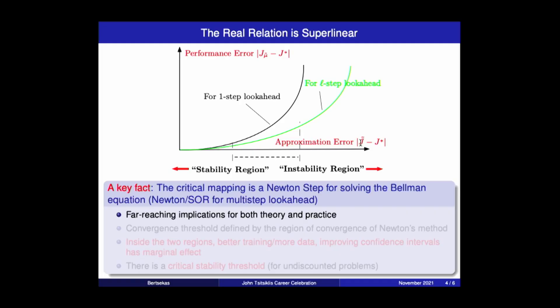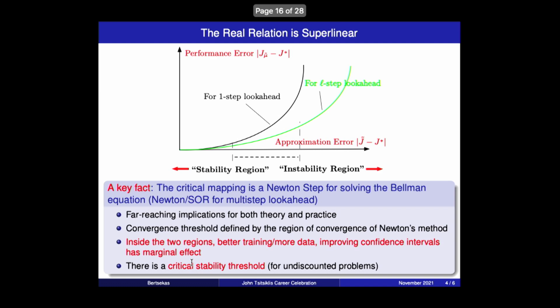And there's also a middle region where you might get lucky and have good performance, but not always. So there's some convergence threshold here, which is defined by the region of convergence of Newton's method. And marginal effects within the two regions, there's marginal effects with all the tricks, the neural network and data collection tricks that you can play to have a marginal effect. And there's a critical stability threshold at least for undiscounted problems. Discounted problems always need stable contraction mapping, stable equations, and so on.